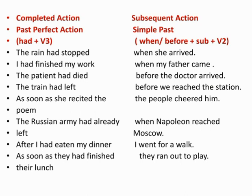The train had left before we reached the station. Here, before you reached the station, the train had already left. The first action is the train leaving — in past perfect: 'had left.' The second action is reaching the station — in simple past: 'reached.' So: the train had left before we reached the station.